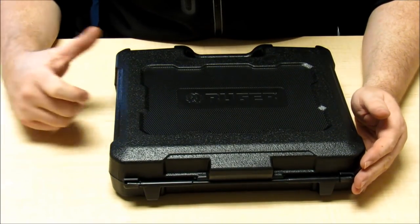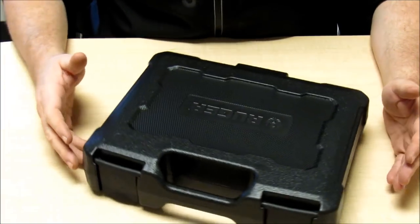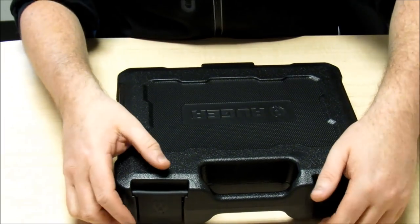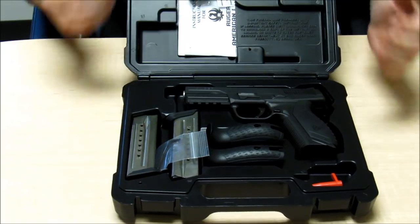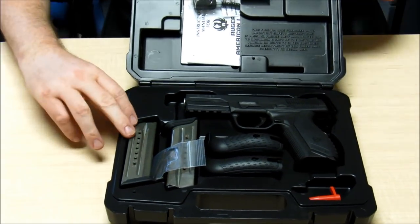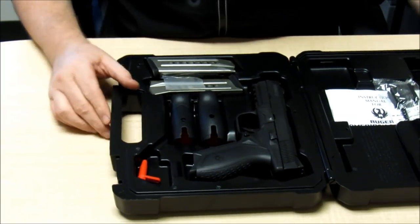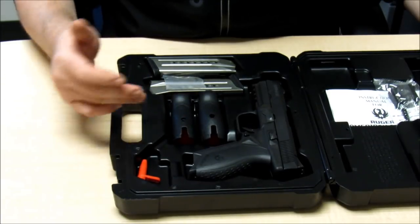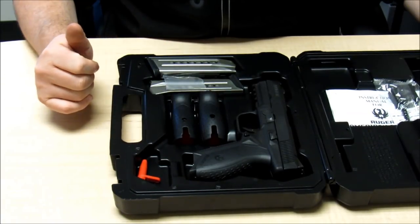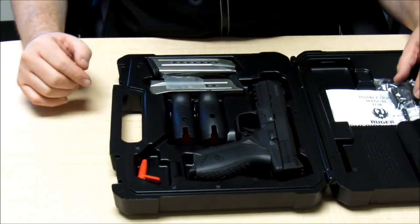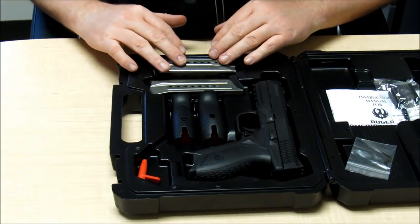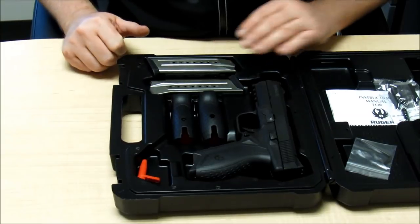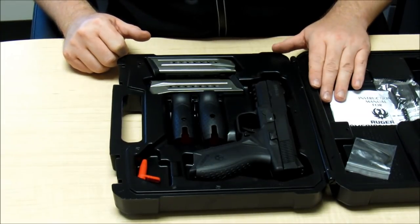Okay here is the Ruger American Pistol as it comes, you can see it's in a very nice locking case. And it comes with everything you see here. You've got the pistol, a small and a large back strap, the Allen wrench to change the back straps, and two magazines, locking block, gun lock, and your paperwork.